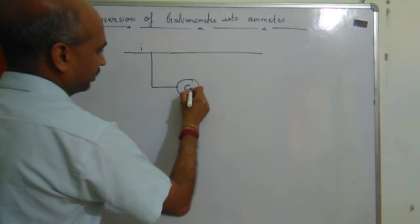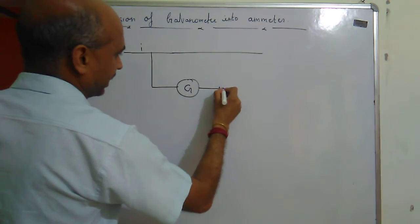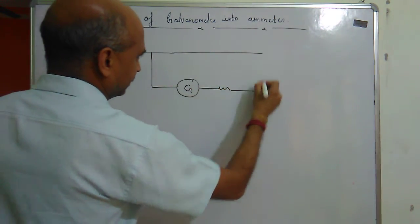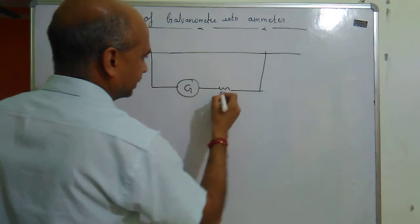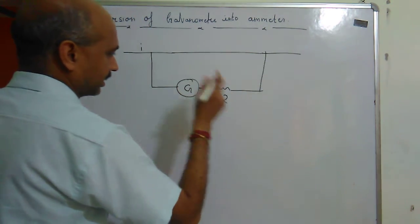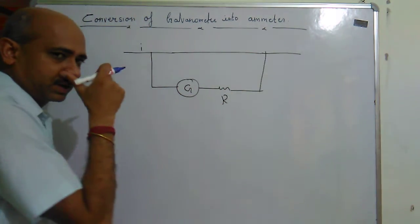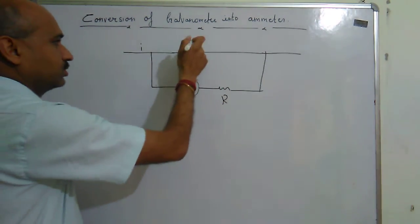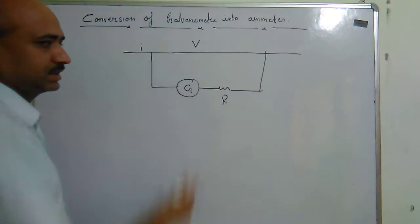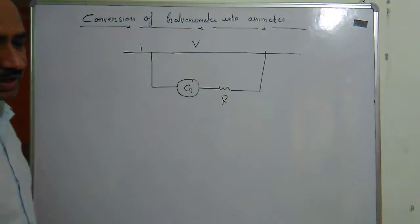This is the circuit: the current I flows through the galvanometer G, and I have added a resistance R connected in series with it. The voltage across this combination is V. We know that I equals V upon R, so applying this here.